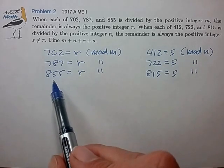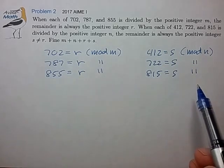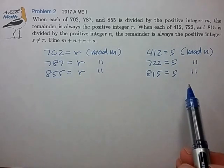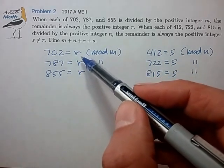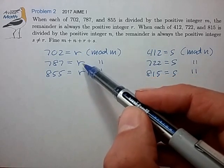Okay, so we have a system of linear congruences. The methods for solving these are pretty standard. In this case, we can take the differences to eliminate the variable r.